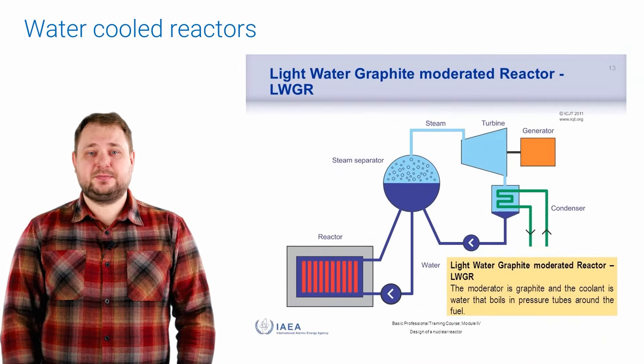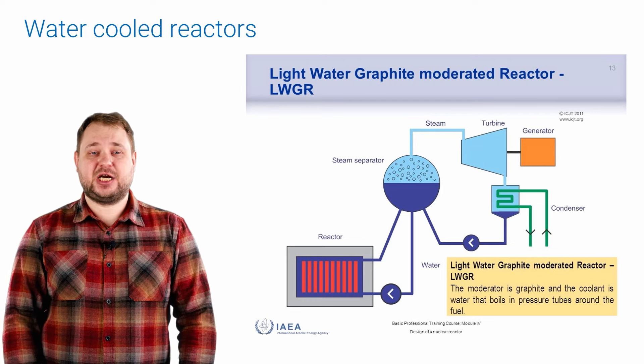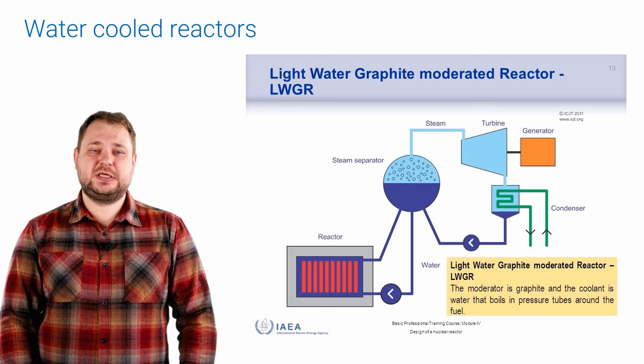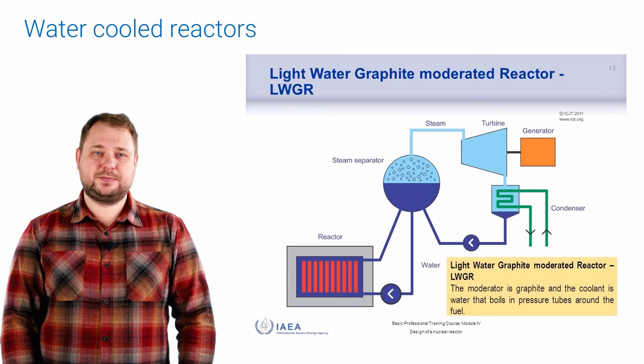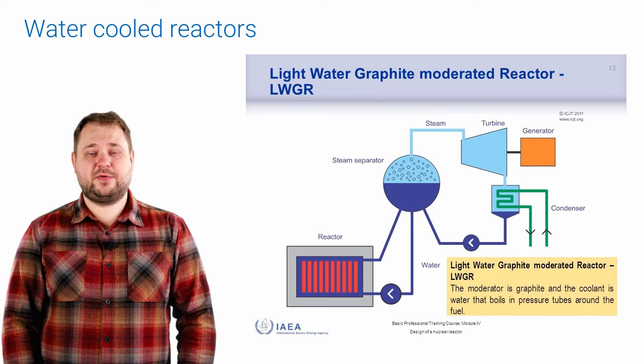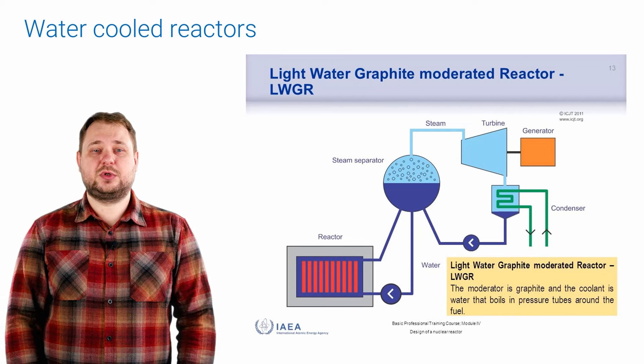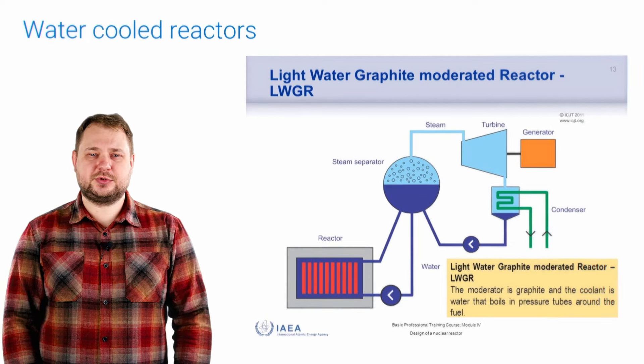Light water graphite reactor, LWGR or uranium graphite reactor. This type of reactor uses graphite as a moderator and ordinary water as a coolant. The operation scheme of the nuclear power plant launched for the first time in the world was based on a graphite water reactor. Today such reactors are rarely used.